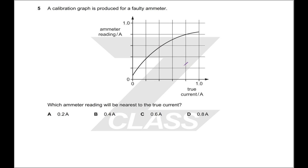A calibration graph is produced for a faulty ammeter. Which ammeter reading will be nearest to the true current? So essentially what you are looking for is read on the graph, you're being given the reading. So 0.2 is by here, 0.4, 0.6, 0.8. Read across, get the true current out, and whichever true current is closest to what you put in, that's the answer. That's the simple way to do it.